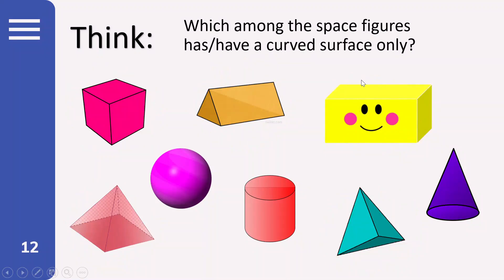Okay, next question. Which among the space figures has or have a curved surface only? A curved surface only. Look, look carefully. Alright, let's see. Yes, it's the sphere only. So there's only one answer here. Okay? Not the cylinder, not the cone, but the sphere has a curved surface only.